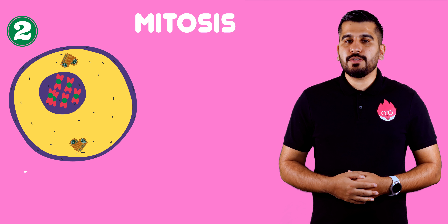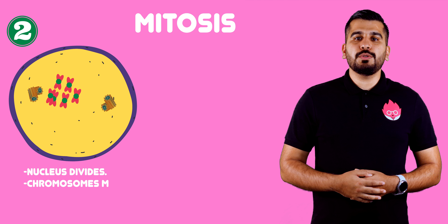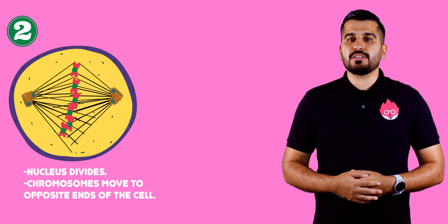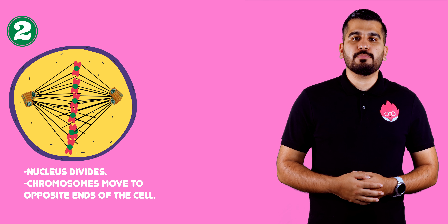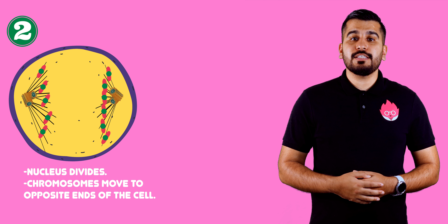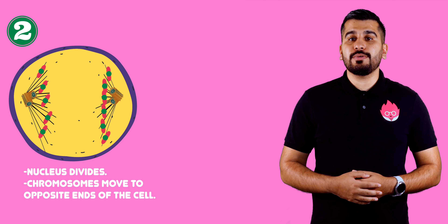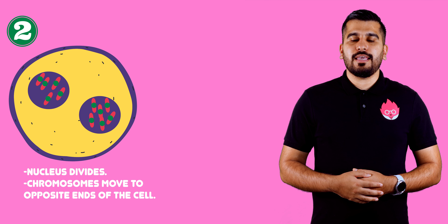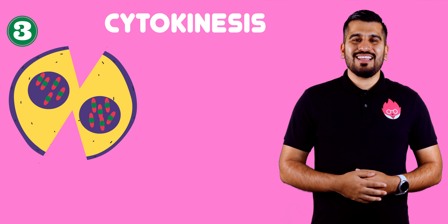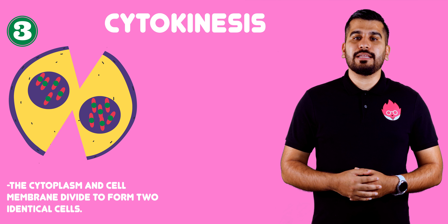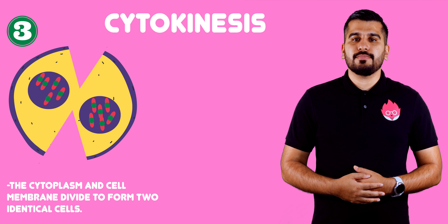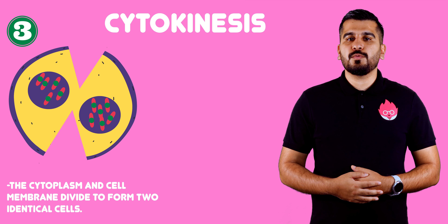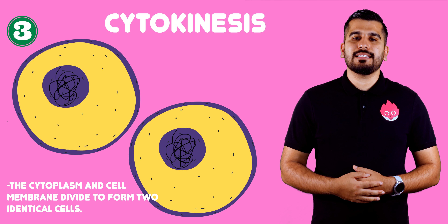In step two, mitosis — the nucleus divides and one set of chromosomes is pulled to each end of the cell. This represents only a small part of the cell cycle. In step three, the cytoplasm and cell membranes divide in cytokinesis to form two identical cells.